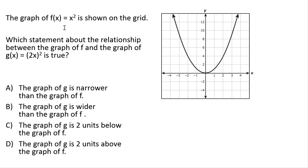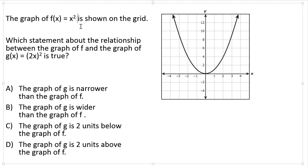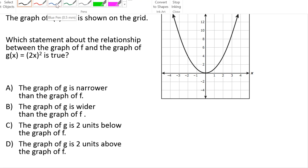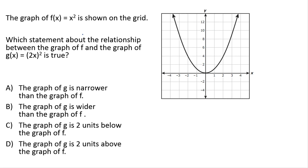Let's take a look at the first one. The graph of f(x) equals x squared is shown on the grid, so this is the graph of f(x) equals x squared. Which statement about the relationship between the graph of f and the graph of g(x) equals (2x) squared is true? First I'd like to point out that we have two different functions here. We have f(x) and we have g(x), and we're going to be comparing the two functions.